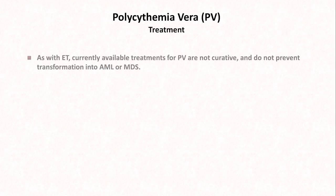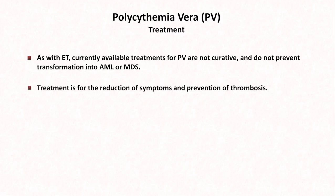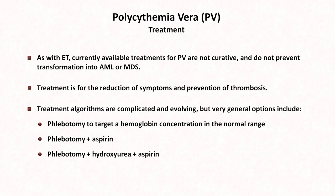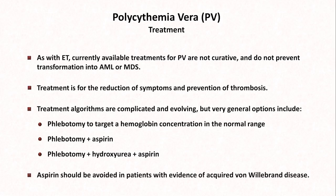As with ET, treatments for PV are not curative and do not prevent transformation into a more aggressive malignancy. Treatment is for the reduction of symptoms and prevention of thrombosis. General options include phlebotomy alone to target a hemoglobin concentration in the normal range, phlebotomy plus aspirin, or phlebotomy plus hydroxyurea plus aspirin. However, aspirin should be avoided in patients with evidence of acquired von Willebrand disease.